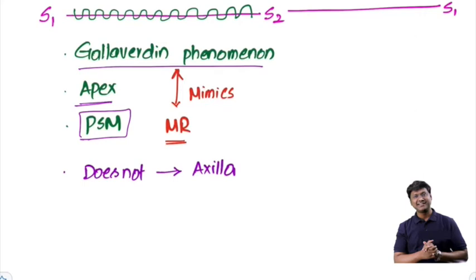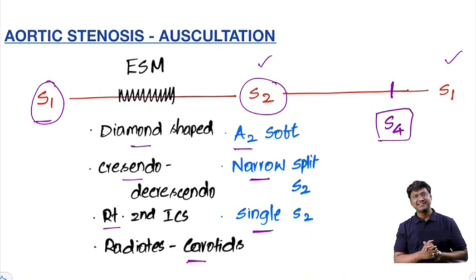At the apex, the pansystolic murmur is heard in mitral regurgitation, so the Gallivardin phenomenon mimics mitral regurgitation. How do you differentiate? In mitral regurgitation, the murmur radiates to the axilla, but in Gallivardin phenomenon, the holosystolic murmur does not radiate to the axilla. These are the important auscultatory findings in patients with aortic stenosis.